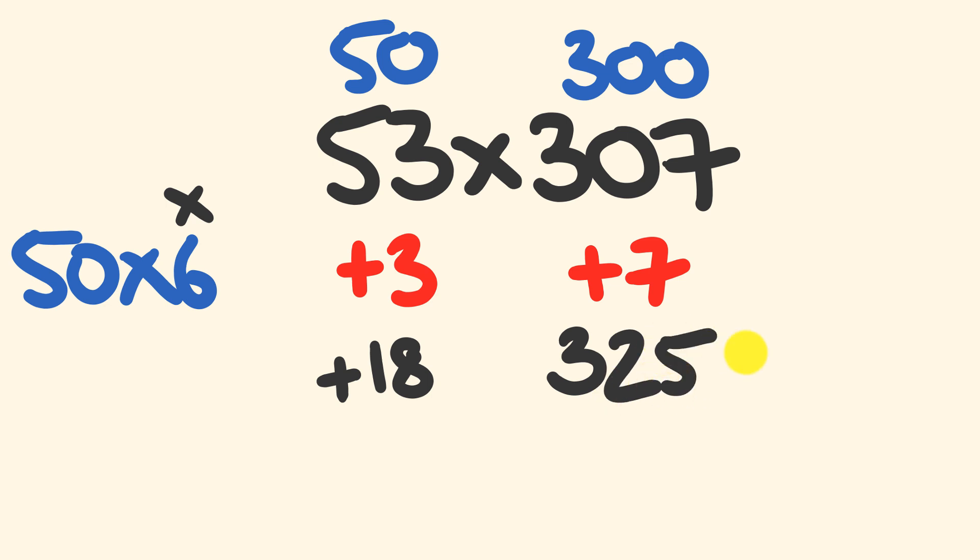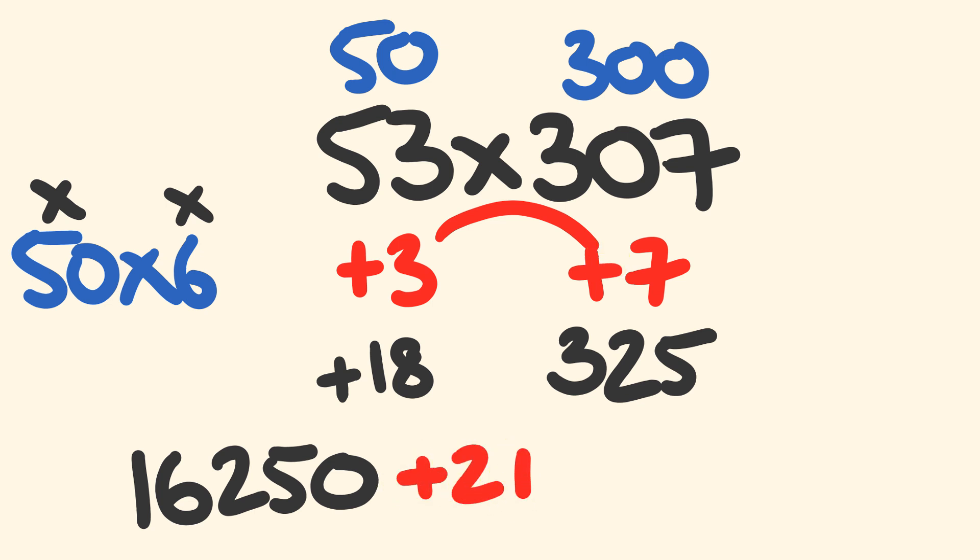Now what we do is we multiply our 325 here by 50. So 325 by 50 gives us an answer of 16250. Finally we work out the units part by multiplying the two differences here. Positive 3 by positive 7 we're going to add on 21 and then get our final answer. So 16250 plus 21 gives us our final answer of 16271.